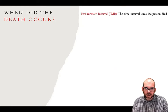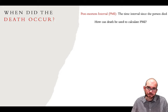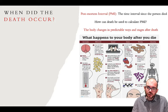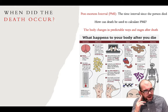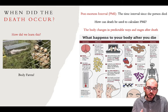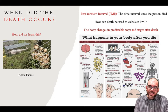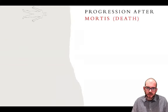To determine when a death occurred, we calculate what is known as the post-mortem interval, or PMI — the time interval from when the individual died to when you discovered the body. The body changes in predictable ways and stages after death, the same way for all individuals. To determine these stages, researchers use something called a body farm, where donated cadavers are placed into different environmental conditions to observe how death progresses.